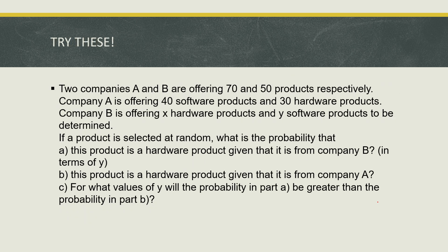Try this at home: Two companies A and B are offering 70 and 50 products respectively. Company A offers 40 software products and 30 hardware products. Company B offers X hardware products and Y software products to be determined. If a product is selected at random, find: the probability it is a hardware product given it is from company B in terms of Y; the probability it is a hardware product given it is from company A; and for what values of Y will the probability in part A be greater than in part B. Comment your answers to show you're watching. Thank you and God bless everyone.